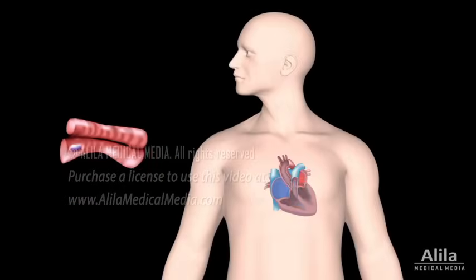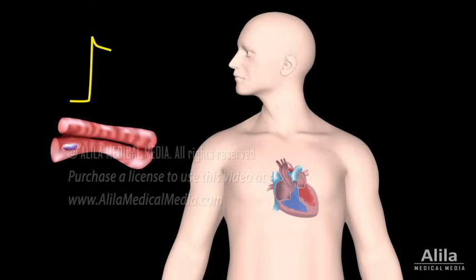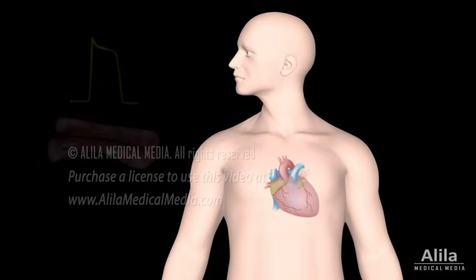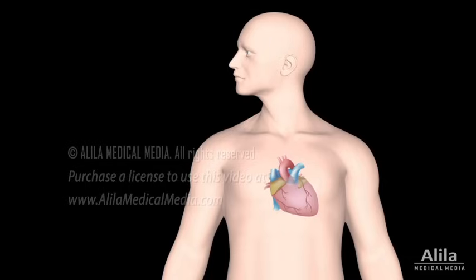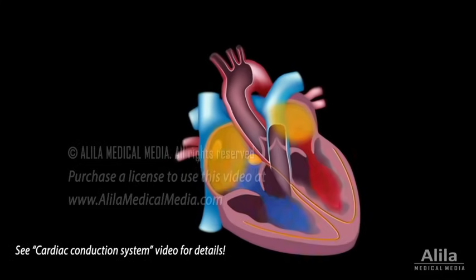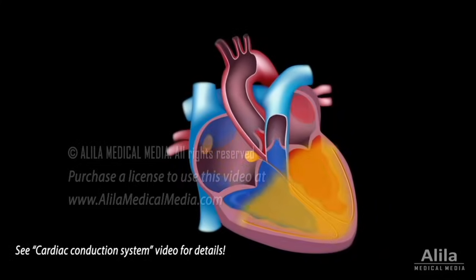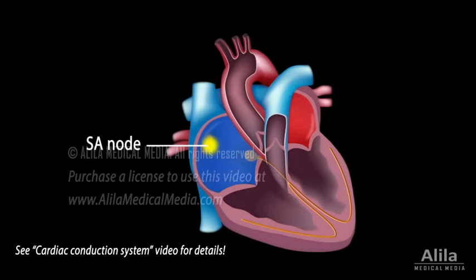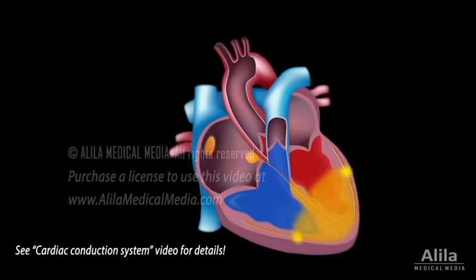The contraction of the heart muscle is initiated by electrical impulses, known as action potentials. Unlike skeletal muscles, which have to be stimulated by the nervous system, the heart generates its own electrical stimulation. The impulses start from a small group of cells called the pacemaker cells, which constitute the cardiac conduction system. The primary pacemaker is the SA node. It initiates all heartbeats and controls heart rate.